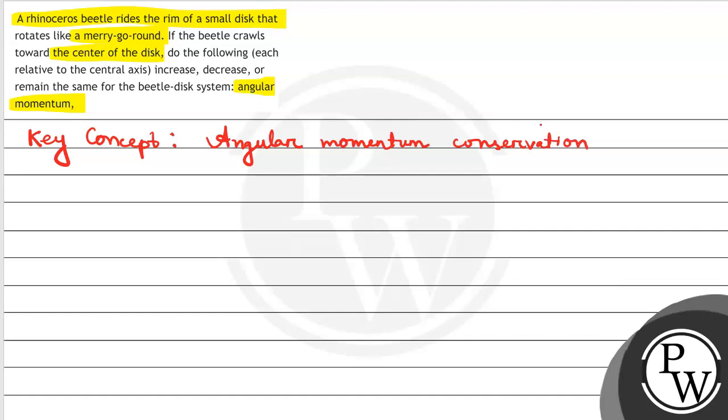Angular momentum conservation. We're talking about a disk with an axis, and here is a beetle running towards the center of the disk.